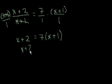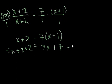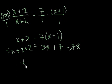So we have x plus 2 equals 7 times the whole thing, x plus 1. We actually have to use the distributive property, so that equals 7x plus 7. This has now turned into a level 3 linear equation. We get all the x's on one side and all the constant terms on the other side. Let's bring 7x to the left by subtracting 7x from both sides. The right-hand side 7x's cancel out, and on the left we have minus 7x plus x, which is minus 6x plus 2 equals 7.